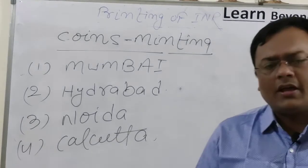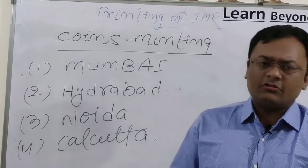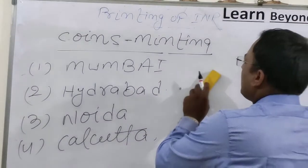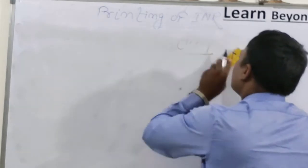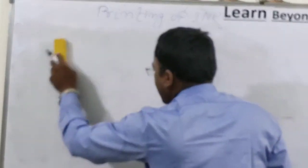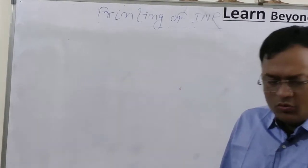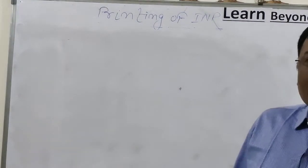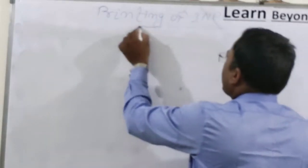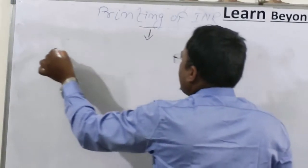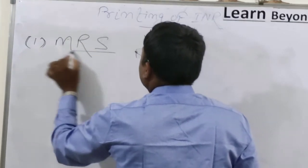An important question: does RBI have unlimited printing capacity? The answer is no — if that were so, the economy would not function, as we already discussed in monetary policy. Currency printing is kept within guidelines. In India, approximately 5 different systems are followed for currency printing, though generally only one is used. Let's discuss the system that is generally followed.